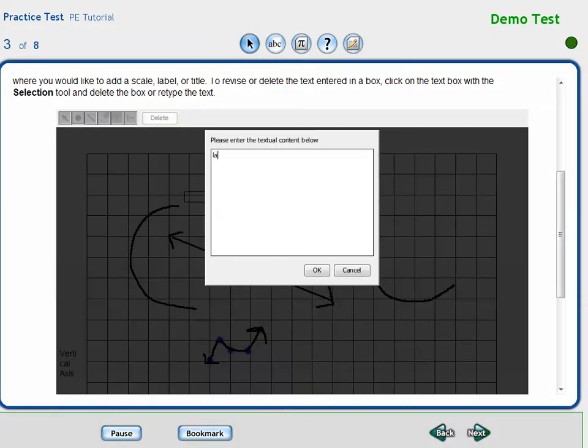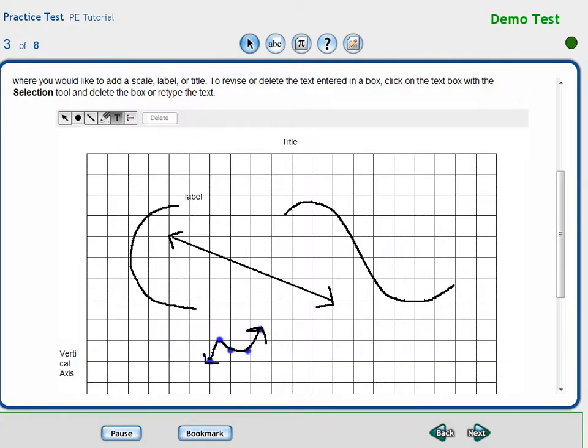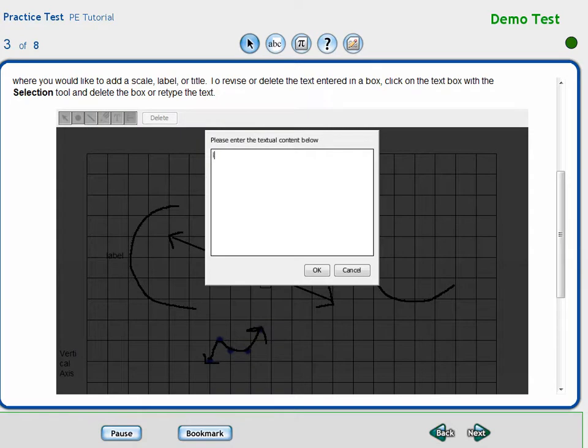In some cases, data on a graph will need to be labeled. The user may do this using either one of the text tools. Labels can be created and moved to identify specific points, lines, or other characteristics of the data on the graph.